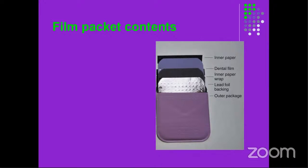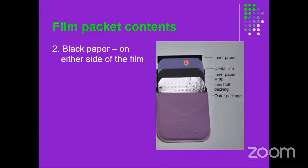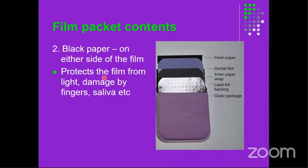The contents of the film packet include black paper inside which covers the film, with black paper on either side. These black papers protect the film from light and damage by fingers and saliva. Film packets should be handled carefully; they should not be bent, and they should not be opened before exposure or before you switch off the lights and have the correct safelight on.